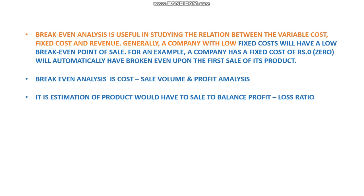Generally, a company with low fixed costs will have a low break-even point of sale. For example, a company with a fixed cost of zero will automatically have broken even upon the first sale of its product, meaning the company having zero fixed cost does not have that much burden for maximum production.